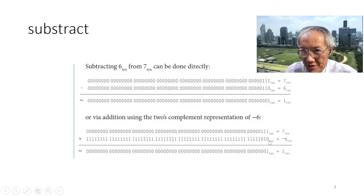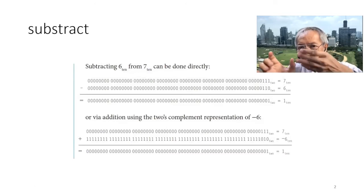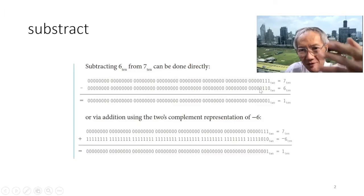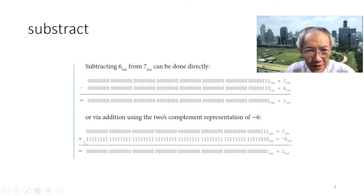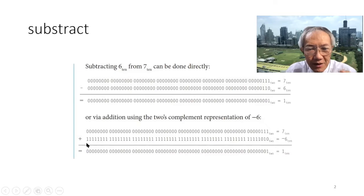Now we know about the magnitude. What about the sign? The sign is on the left. When it's inverted, all ones become the leftmost bit — the sign bit. For positive numbers the sign bit is zero, and for negative numbers it is one.